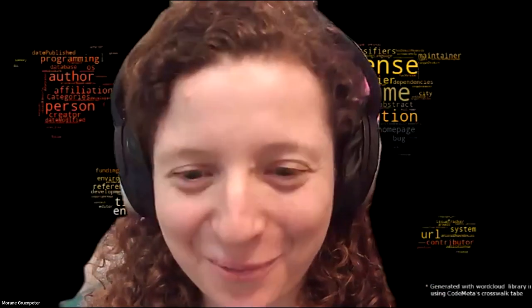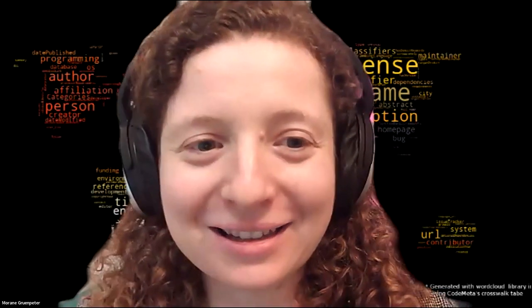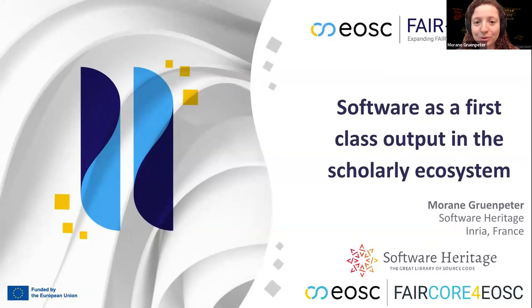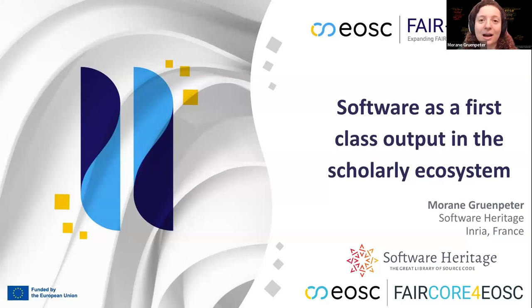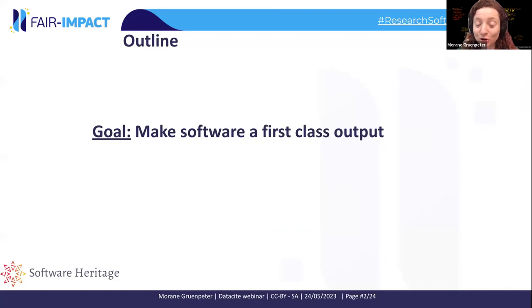Thank you, Gabby, and thank you to the DataCite team for inviting me to this webinar on presenting software as a first-class output in the scholarly ecosystem. My name is Moran Groombetter. I work for the Software Heritage team at the INRIA Research Center in France. I'm a software engineer, but also a metadata specialist. I project manage the effort of Software Heritage and INRIA in two European projects: the FAIR Impact Project and FAIR Core for EOSC. Today I'm going to discuss why and how to make software a first-class output.